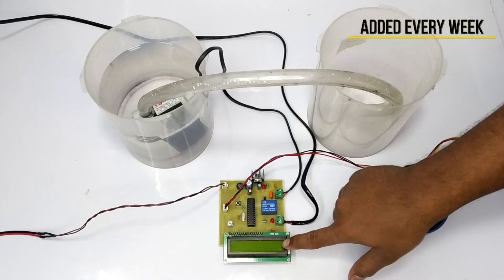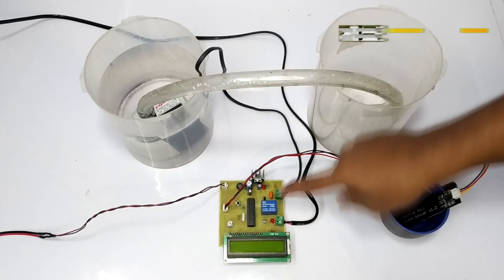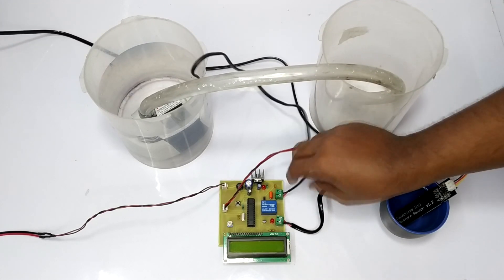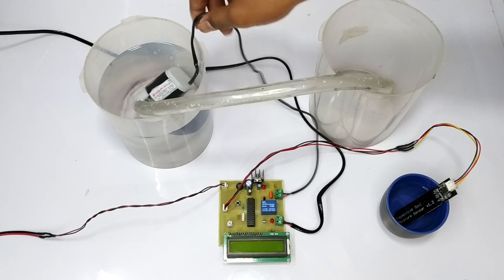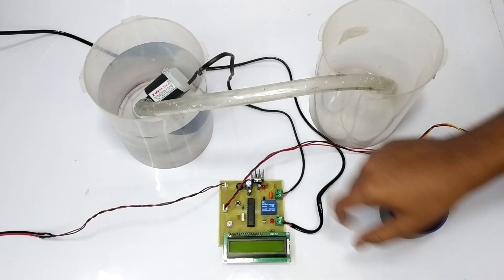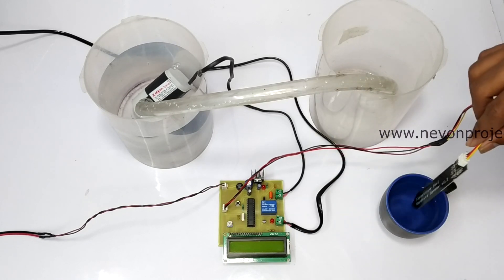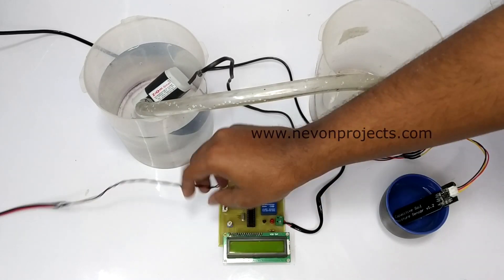First, we have the LCD screen on which all the data is displayed. This is the AC input connection. This is the pump connection, and the pump is kept in the container from where the water is passed to the soil. This is the sensor connection, and this is the soil moisture sensor. And finally, the adapter power supply.